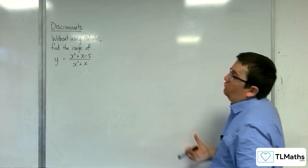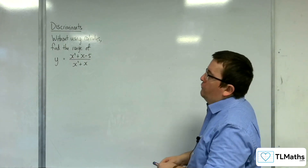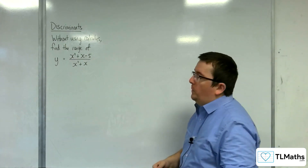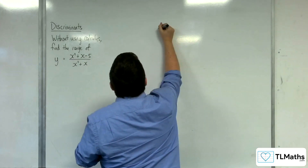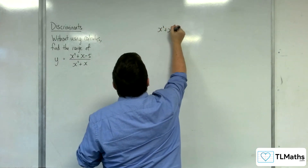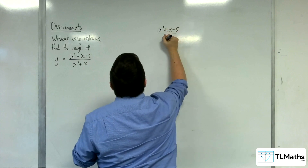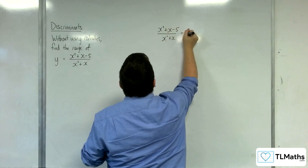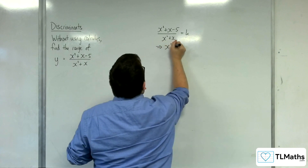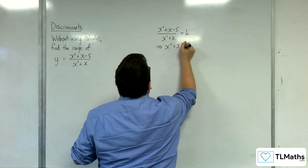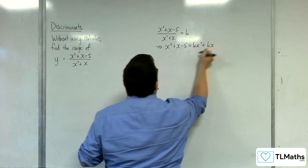In this video, I'm going to be finding the range of y equals x squared plus x take away 5 over x squared plus x, without using calculus. So, we've seen that what we do is we're going to put this equal to k. I'm going to multiply it by the denominator, so x squared plus x take away 5 is equal to kx squared plus kx.